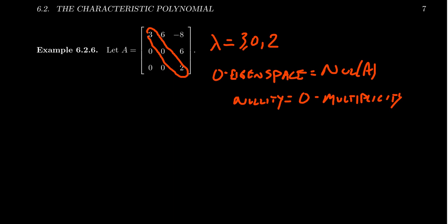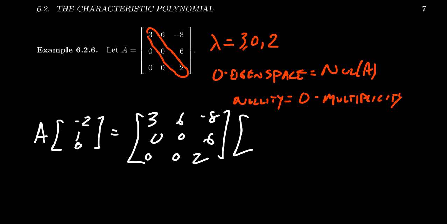One could see very quickly that if we investigate the null space of this matrix, you can grab a vector negative 2, 1, and 0. I want to verify that with everyone here. 3, 6, negative 8, 0, 0, 6, 0, 0, 2, times that by the vector negative 2, 1, and 0.